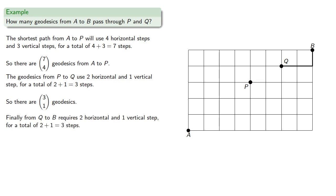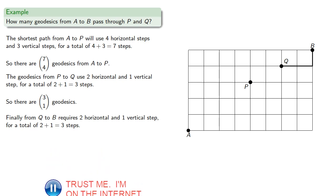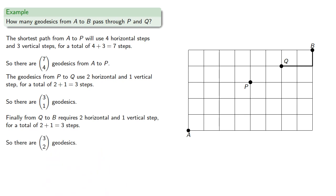Finally, from Q to B requires two horizontal and one vertical steps for a total of three steps, so there are three choose two geodesics.